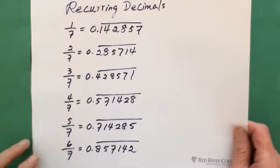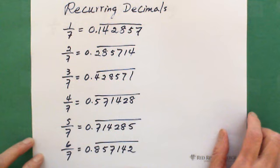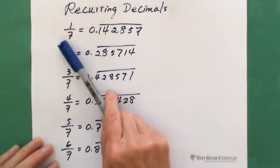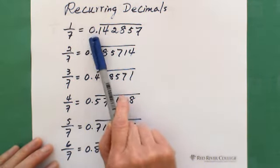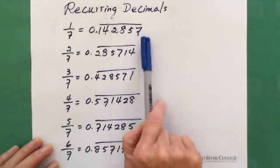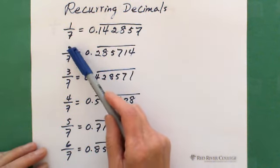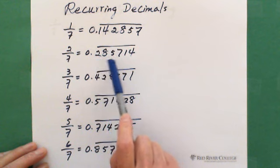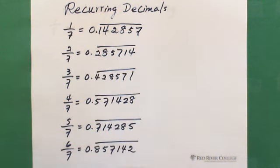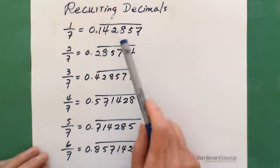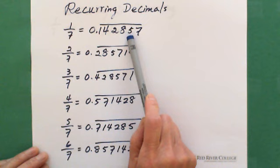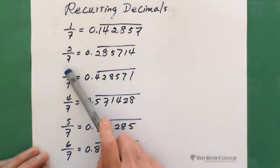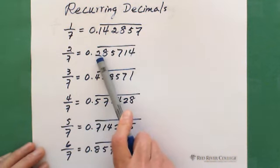I write this pattern here. 1 divided by 7, or 1 over 7, gives 0.142857. If 2 over 7, you get 0.285714. Pay attention: 142857 is 1 over 7. When 2 over 7, the first digit is 2.